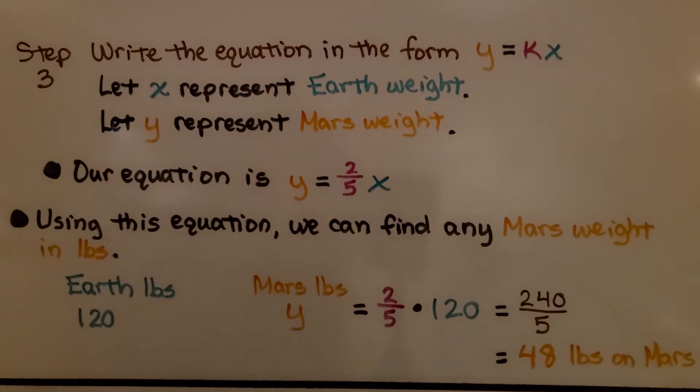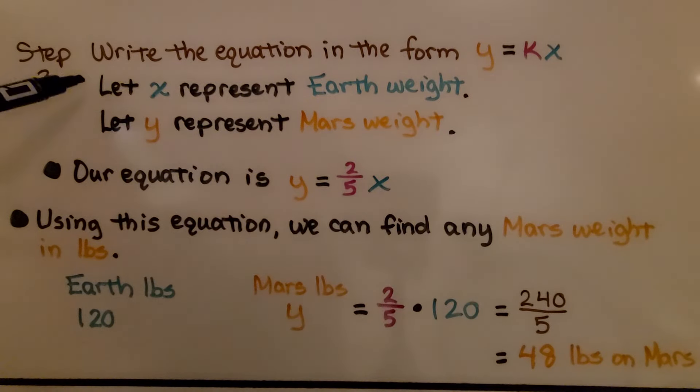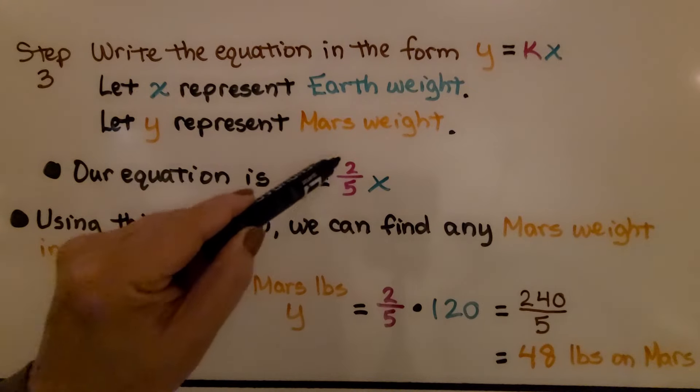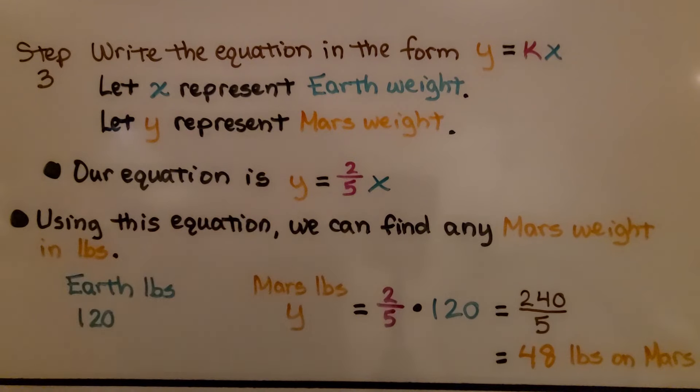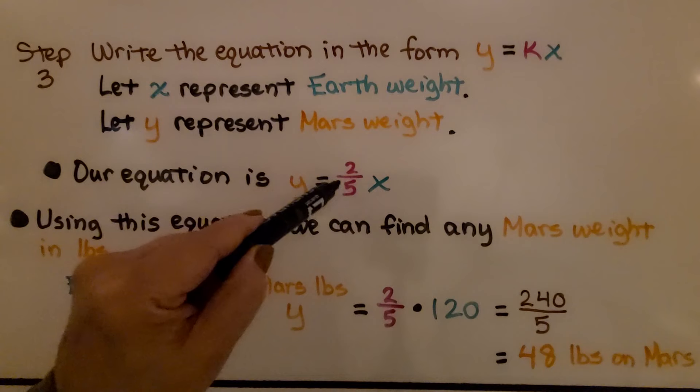Step 3, we write the equation in the form y = kx. We're going to let x represent the Earth weight, and y represent the Mars weight. Our equation is y = (2/5)x. Remember, our constant of proportionality was 2/5, our k.